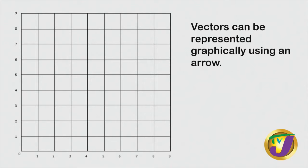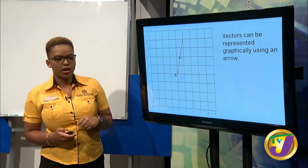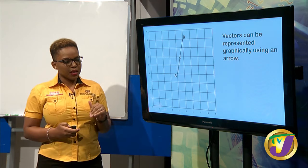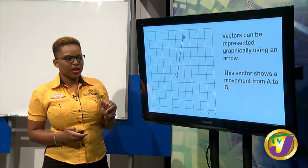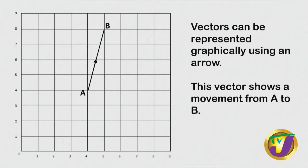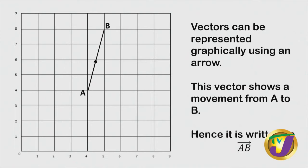Vectors can be represented graphically using an arrow. We're calling this vector AB — it shows a movement from A to B. When writing vector AB, we write capital A, capital B with a little arrow at the top showing we're going from A to B. That arrow is very critical because it shows the start point and end point of the movement.